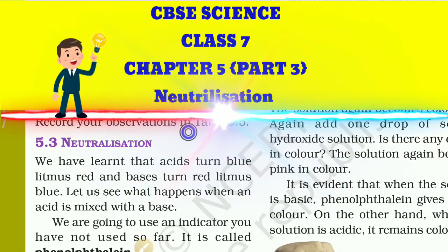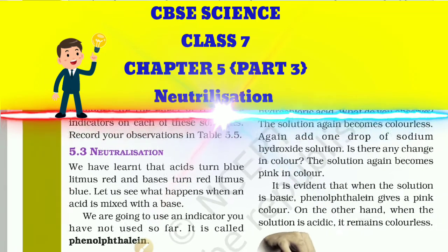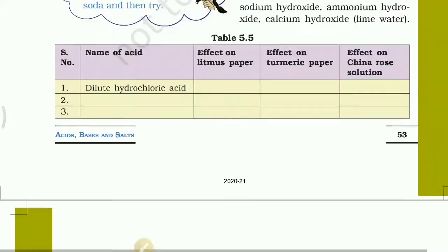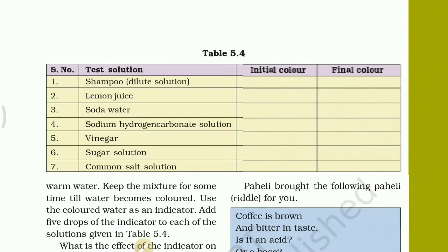Hello everybody, how are you? This is CBSC Science Classes, Chapter No. 5, Part No. 3 of Chapter No. 5. Before this part, we have discussed about the general properties of Acid and Bases with the neutralization, and the indicators — the natural indicators by which we identify the nature of Acid and Bases.